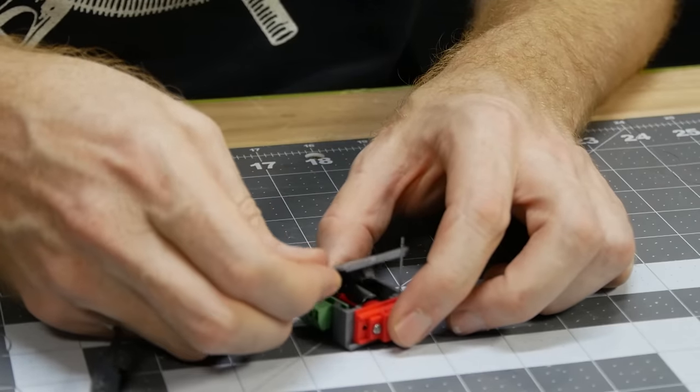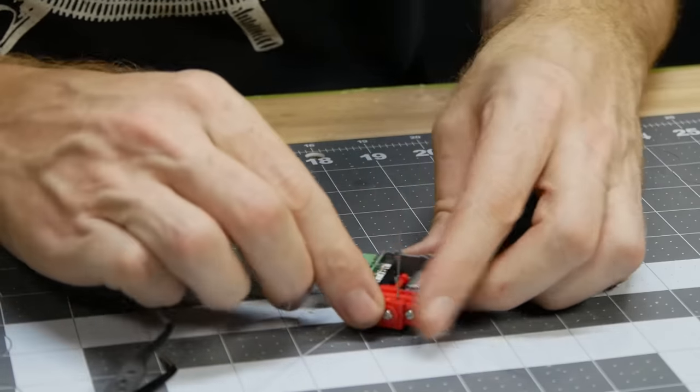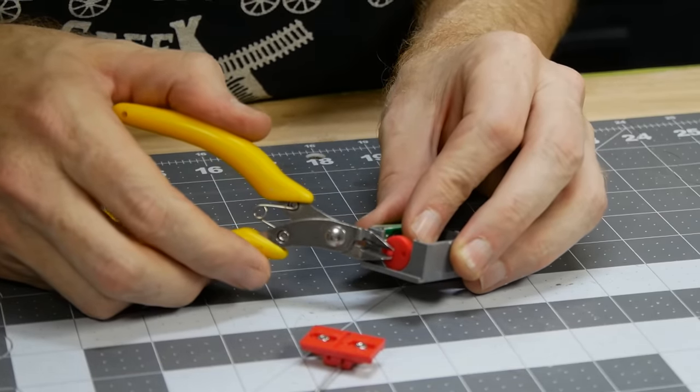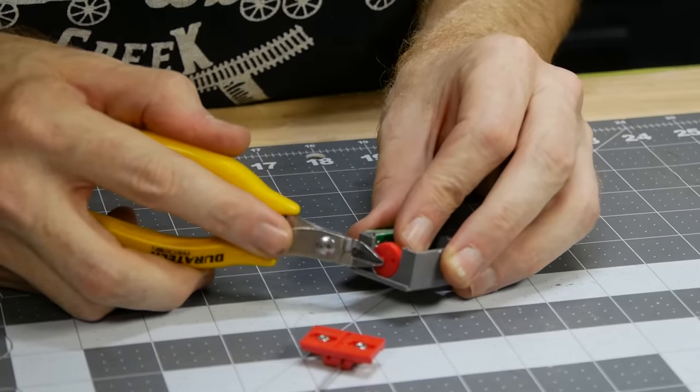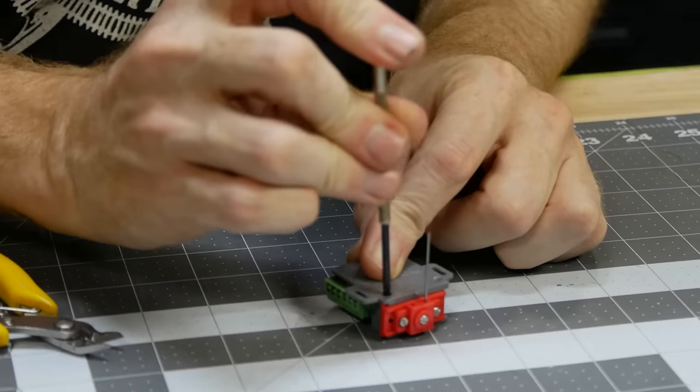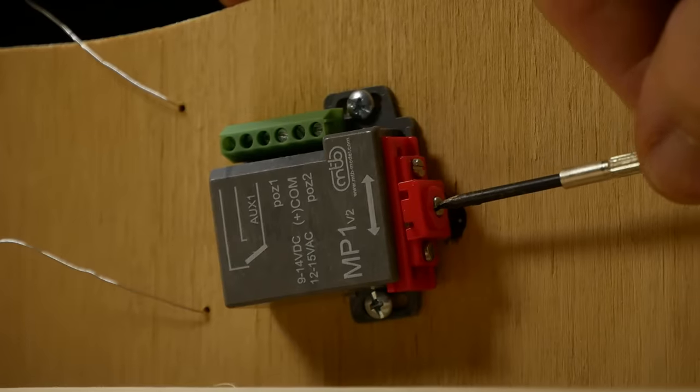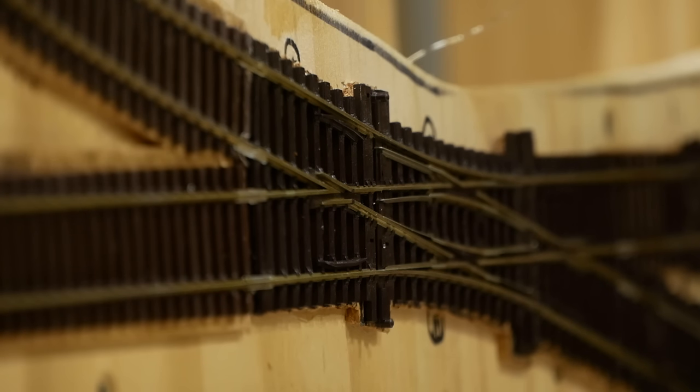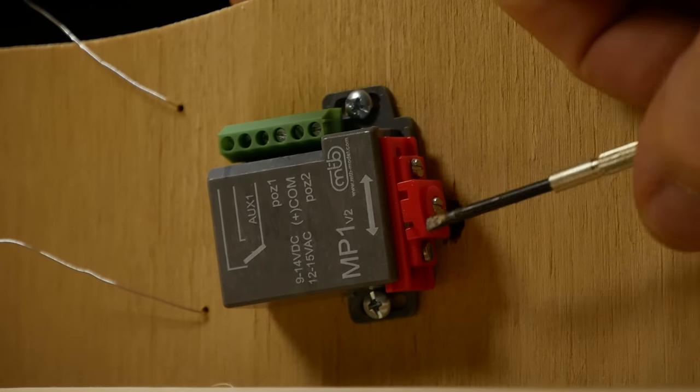Also the MP1 can have the throw travel adjusted. Depending on whatever scale you're working in N, HO or O scale they can be adjusted by opening the housing and moving the small pin on the rotating wheel to the desired spot. To adjust the pin the front screw is loosened. Now the pin can be lowered so that it barely pokes past the throw bar on the turnout. Then just tighten the front screw back up.